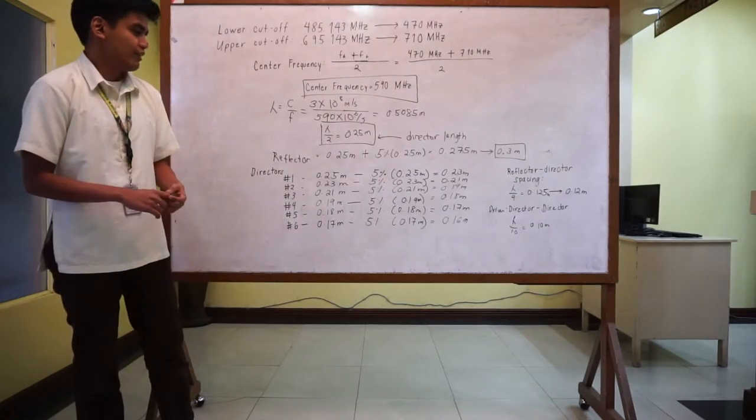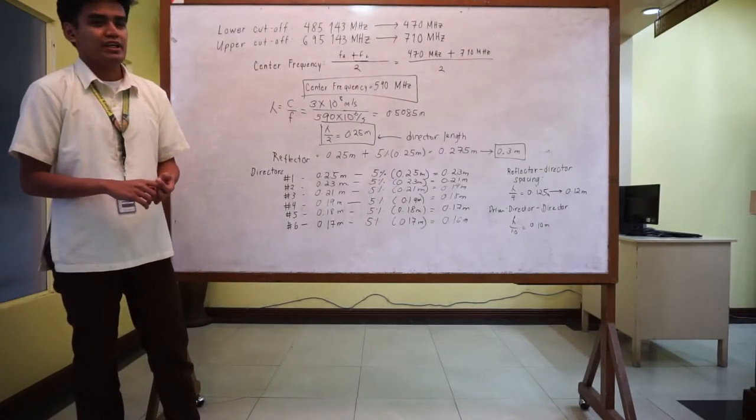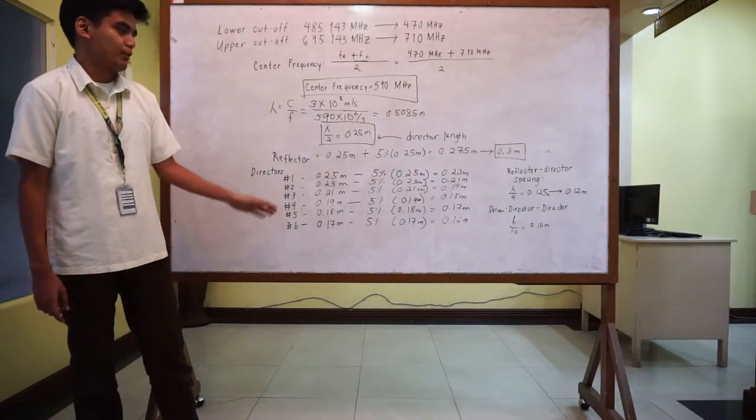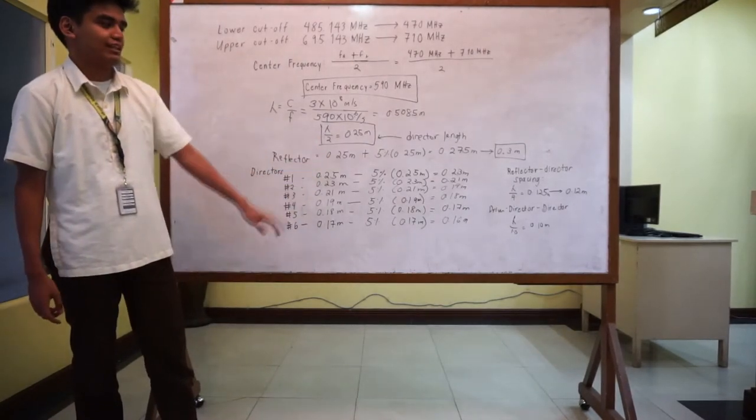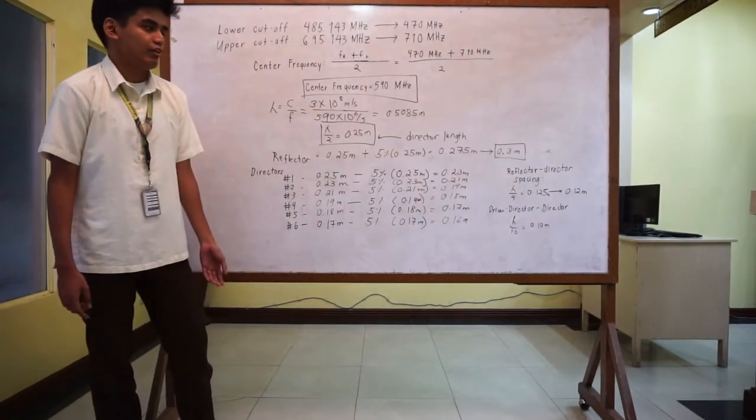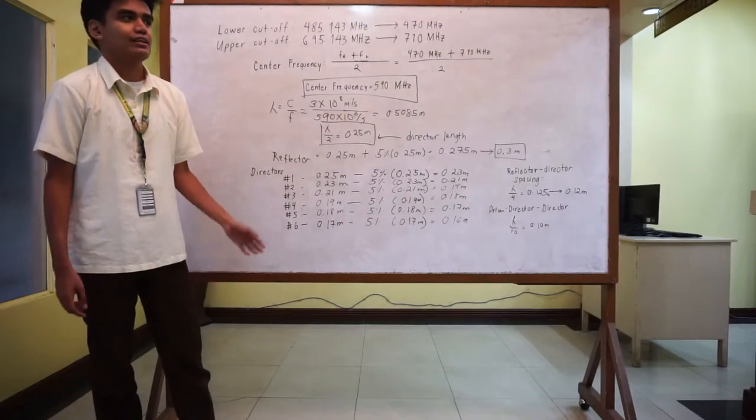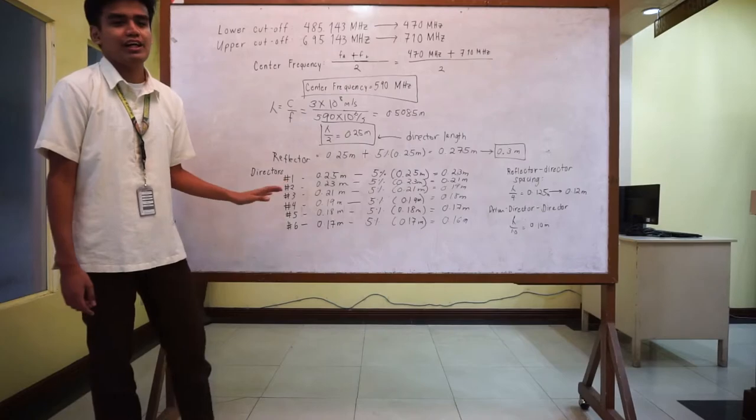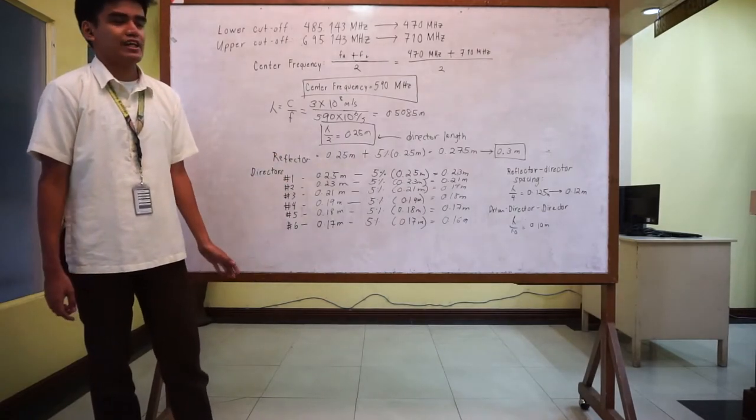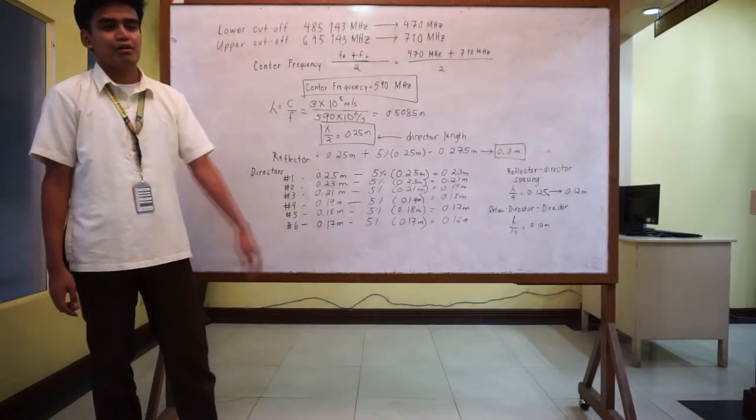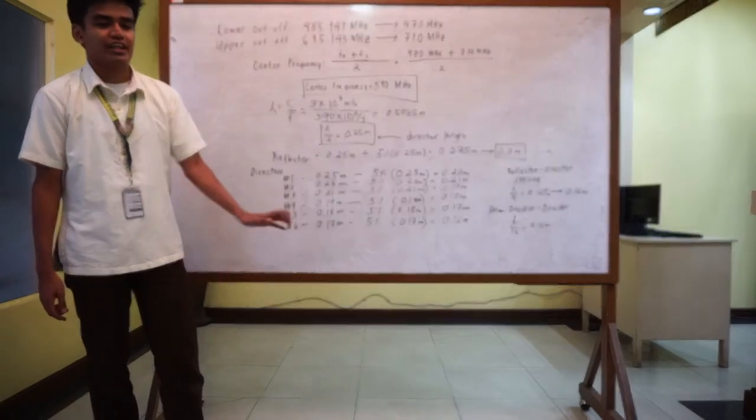For the reflector, the reflector will be 5% longer than the driven element. So 0.25 meters plus 5% of 0.25 is equivalent to 0.275 meter. We rounded it up to 0.3 because the reflector element needs to be capacity so that it will lock the electromagnetic waves and it will push it forward to the driven element so that the power will be concentrated in one direction only.